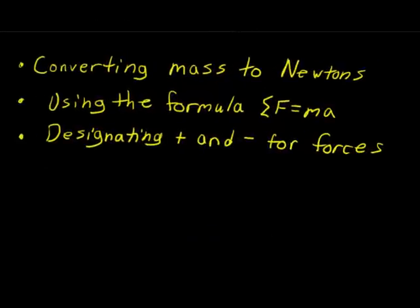A couple of key points from problem 8.2: first, we showed how to convert mass to weight in newtons — given kilograms, multiply by 9.81 to get newtons. Second, we used the formula total net force equals mass times acceleration, finding net force from weight and ground reaction force to solve for vertical acceleration. Finally, we highlighted the importance of designating positive and negative force directions from the start, as this guides the rest of the problem.